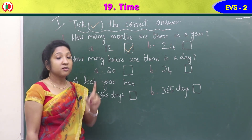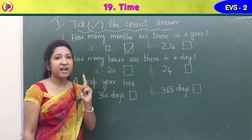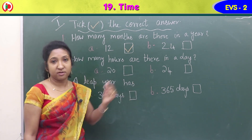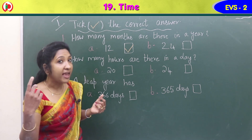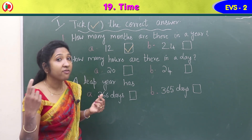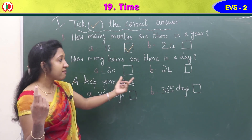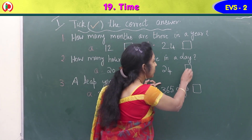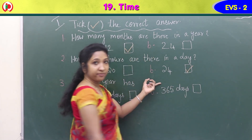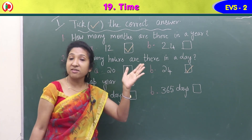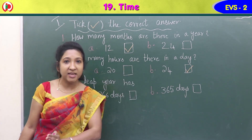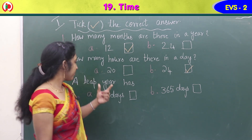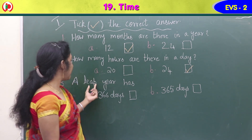Second question: how many hours are there in a day? Each day is divided into hours. Option A is 20, option B is 24. We have 24 hours in one day — 12 hours in the daytime and 12 hours in the night time, totalling 24 hours. Tick option B.